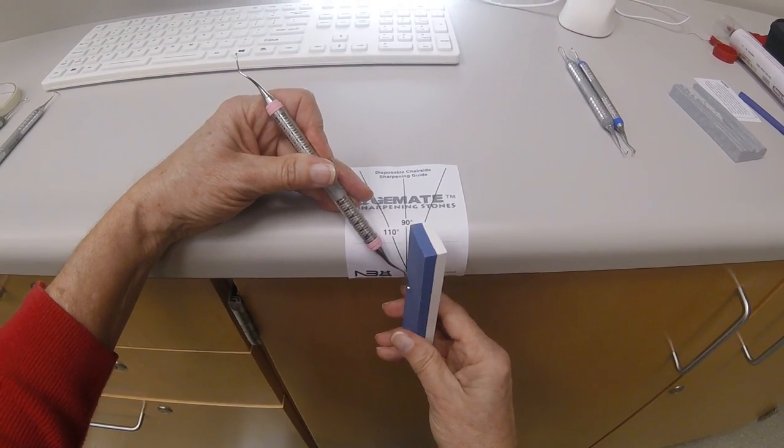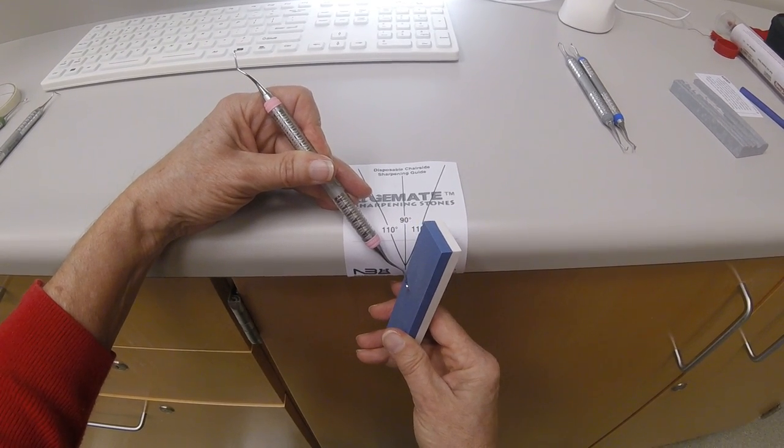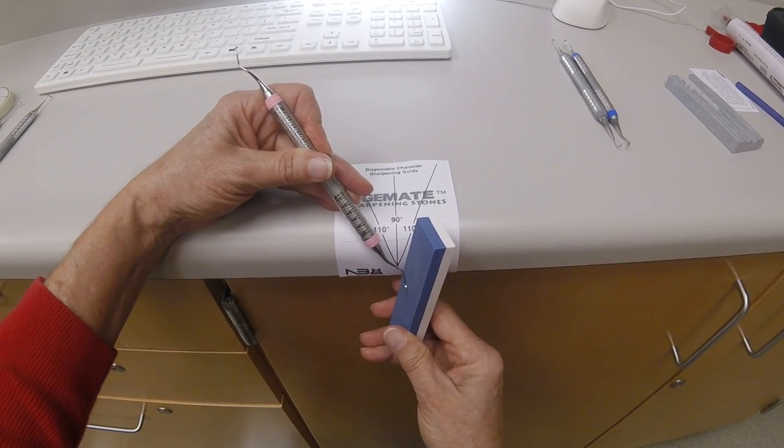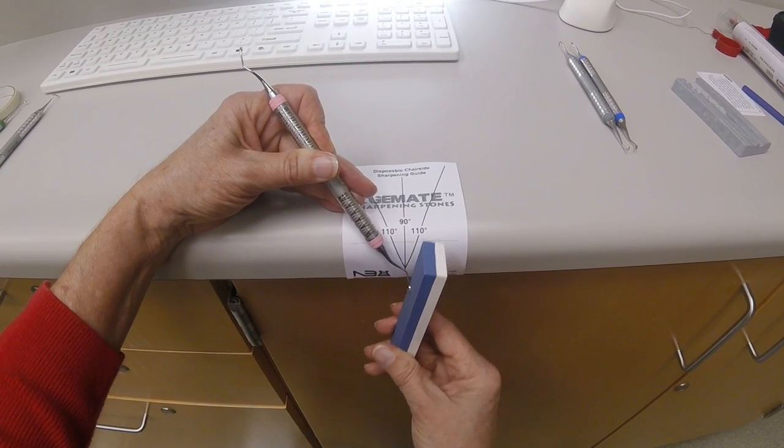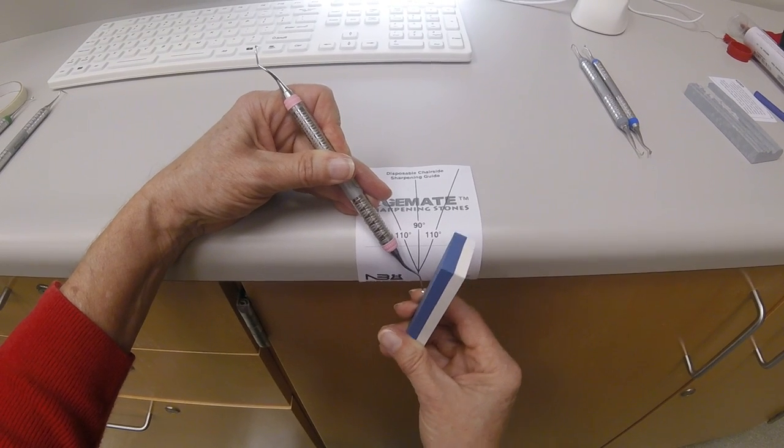Start at a 90 degree angle on the heel of the instrument, rock back to 110. Begin the sharpening action on a downstroke, following the contour of the cutting edge until you reach the toe.